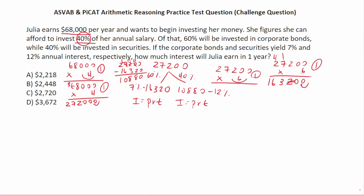Let's go ahead and start plugging these things in. We're solving for I in both cases. P is the amount you invest. For corporate bonds, that's $16,320. The interest rate is 7%, so that's times 0.07. T is time — it's going to be one year. For securities, the principal is $10,880, the interest rate is 12% which is 0.12 in decimal form, and again it's for one year. Multiplying anything by one just yields back itself, so we can cross out those ones — they don't impact the math.